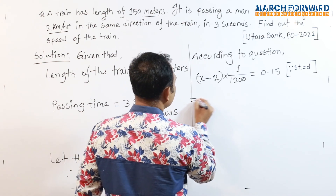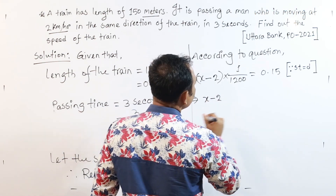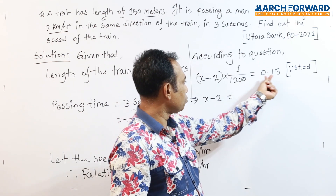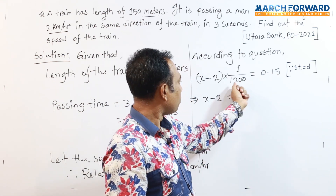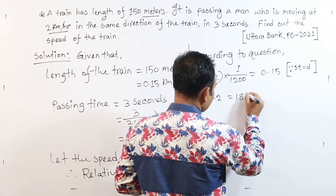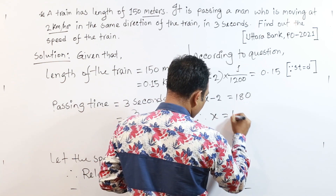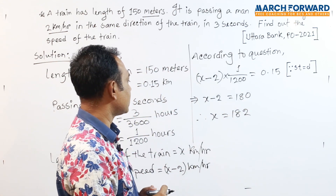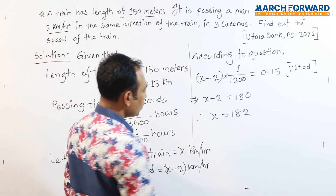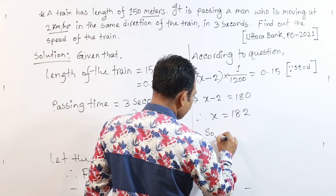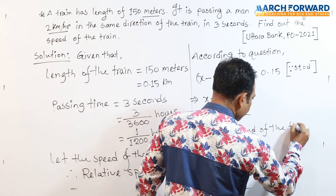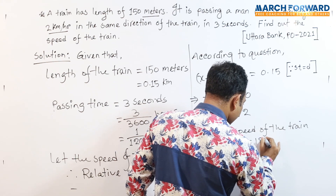I can form this in the middle. I can calculate x minus 2. I can cross the line. I can calculate it in the width. I can multiply 2 times 0. I can multiply 1.8. So x is equal to 182.